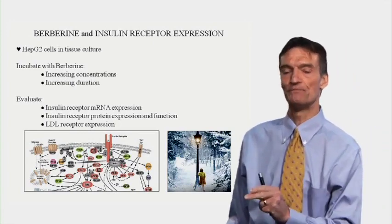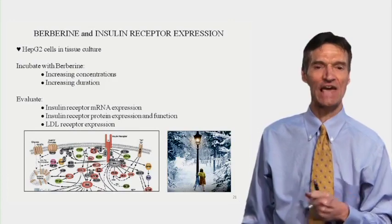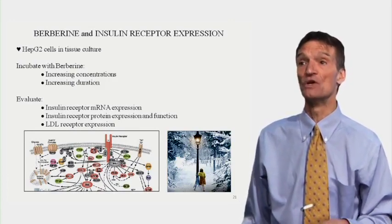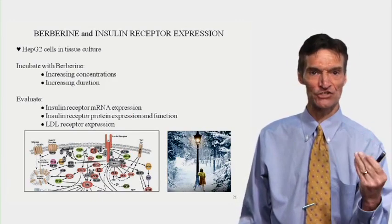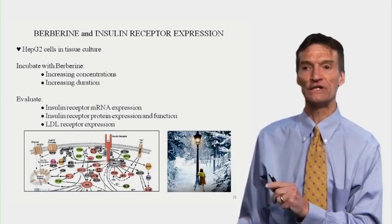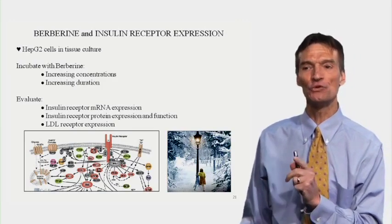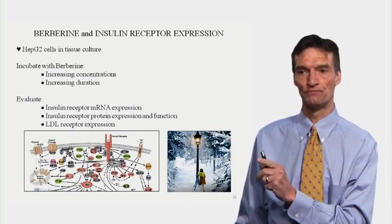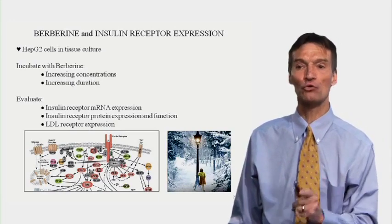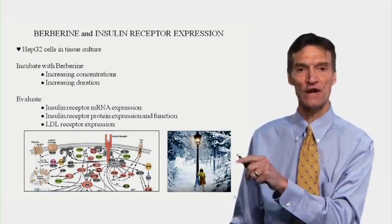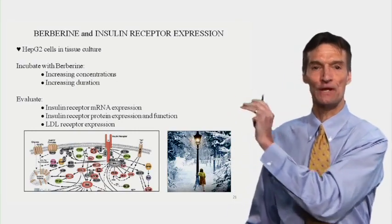The route into Narnia is through the wardrobe; the route for insulin to have its anabolic effects is through the insulin receptor. Let's look at berberine and insulin receptor expression. We're going to take HepG2 cells — immortalized liver cells used in cell culture studies — and incubate them with berberine at increasing concentrations or over increasing time durations. We'll evaluate insulin receptor messenger RNA expression, insulin receptor protein expression and function, and LDL receptor expression.